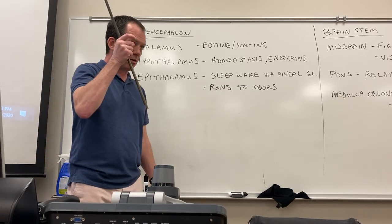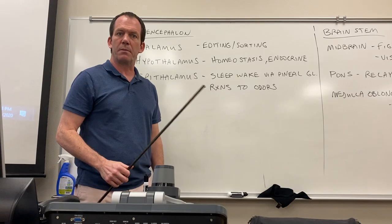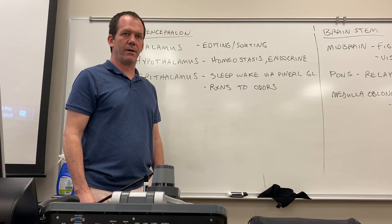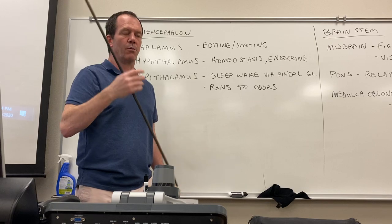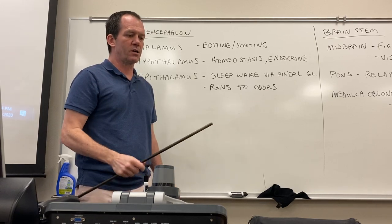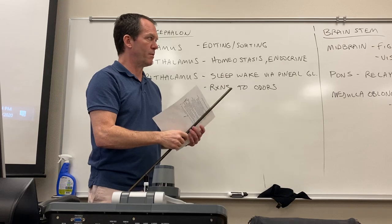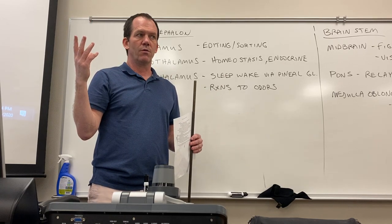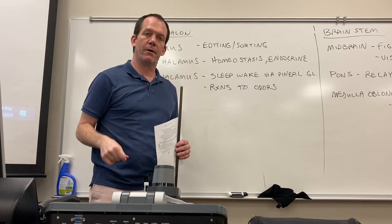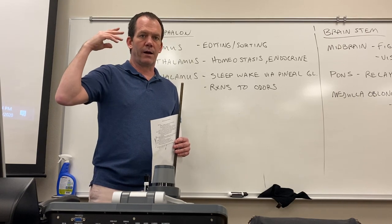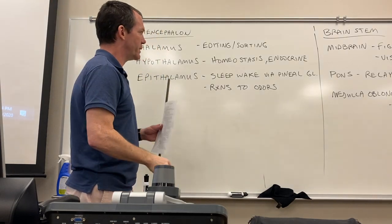The thalamus — the middle part of the diencephalon — is kind of an editing and sorting region. It tells you what you find pleasant or unpleasant, like opinions about taste or colors. It also gets rid of a lot of stimuli you don't think are important. For instance, I know that periodic table is up there on the wall, but I don't have to think about it all the time. The thalamus kind of eliminates that for me.